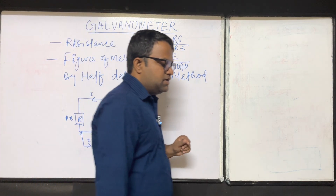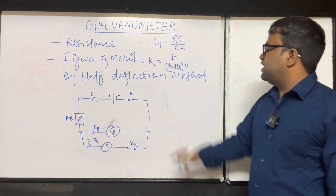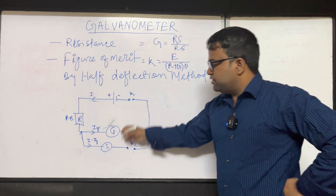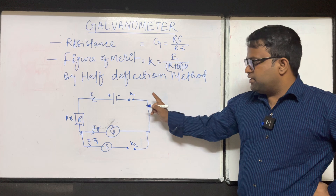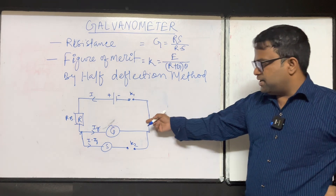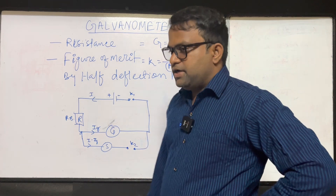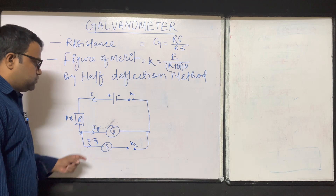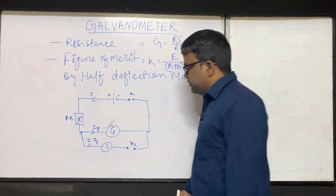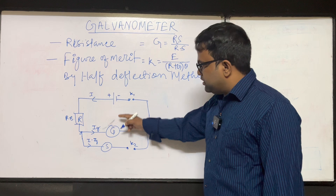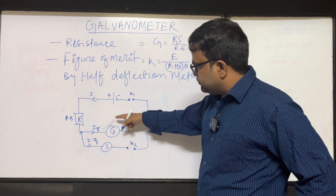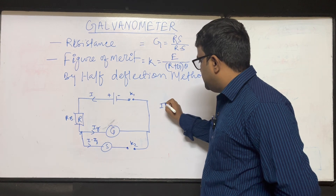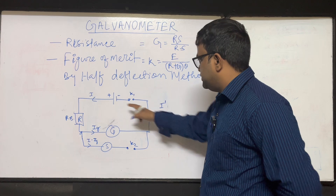Our target is to find out the galvanometer resistance and derive the value g = rs/(r-s). From the parallel connection concept and Ohm's law, we can find out the resistance value G. Using Ohm's law, we can find out the current. Let us say i dash — the current i is flowing.